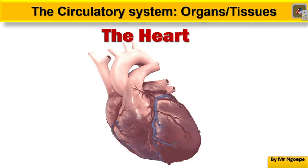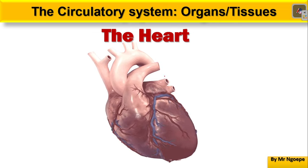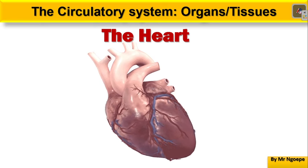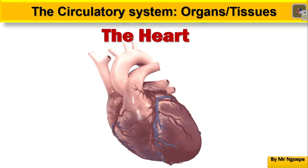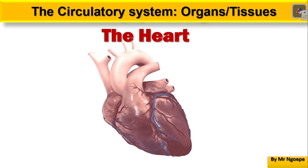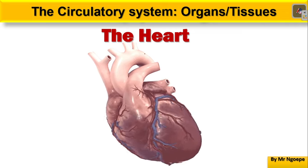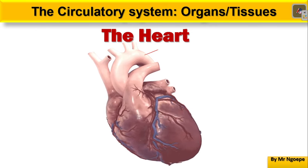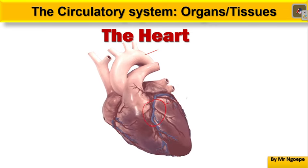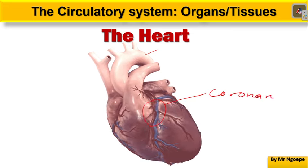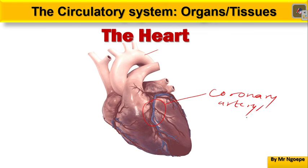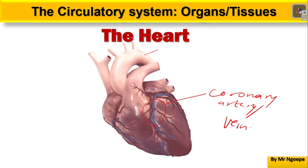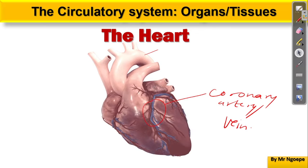Now let's look at the heart — the third and last component of the circulatory system. On the outer side of the heart, you'll notice there's some fat around the heart to avoid mechanical shock. You can see blood vessels such as the aorta and the vena cava, as well as the coronary arteries and coronary veins of the heart. That is the external structure of the heart at grade 9 level.